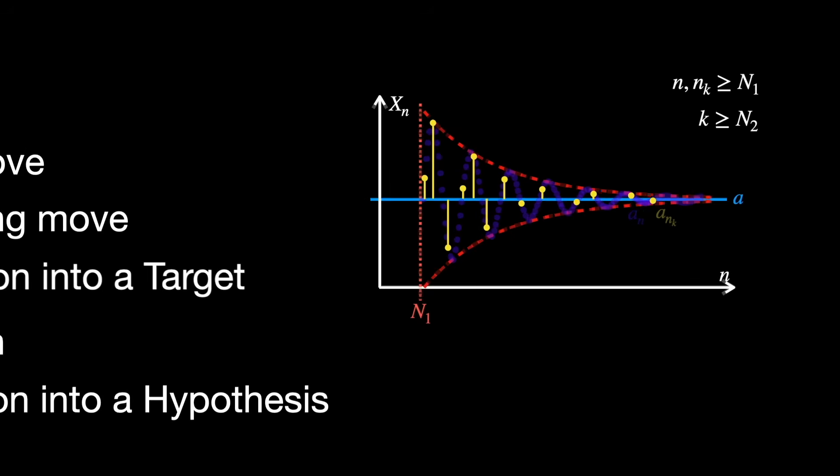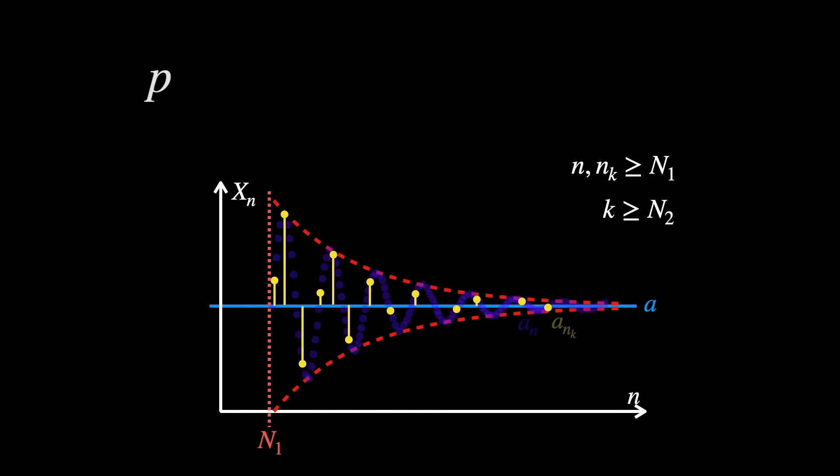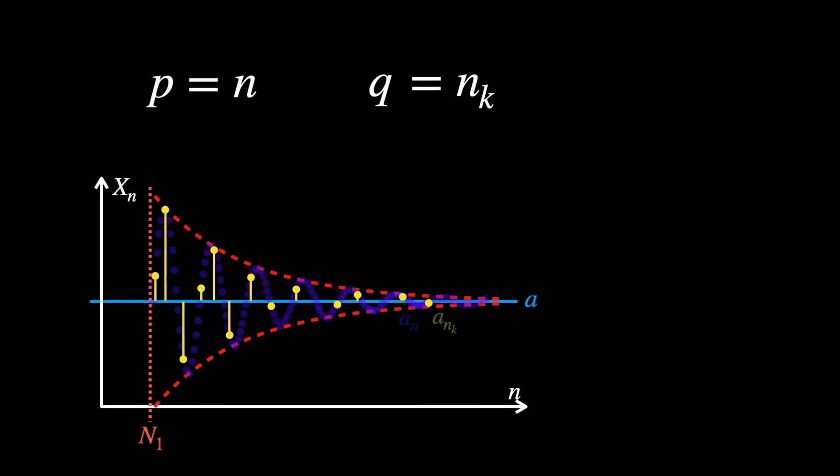So our plan is to label the index of our main sequence term as p and the index of the matching subsequence term as q so we can apply the Cauchy property between them. To make all this happen, we need the following.